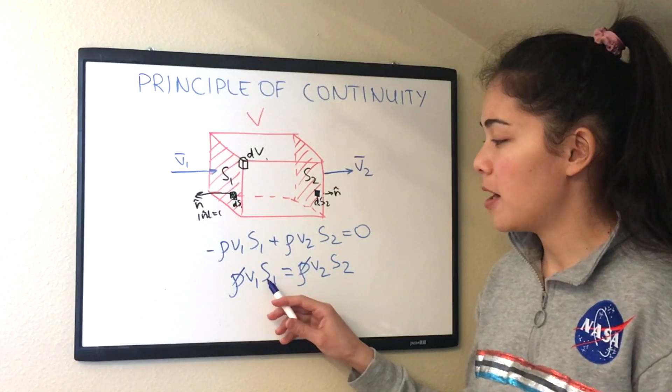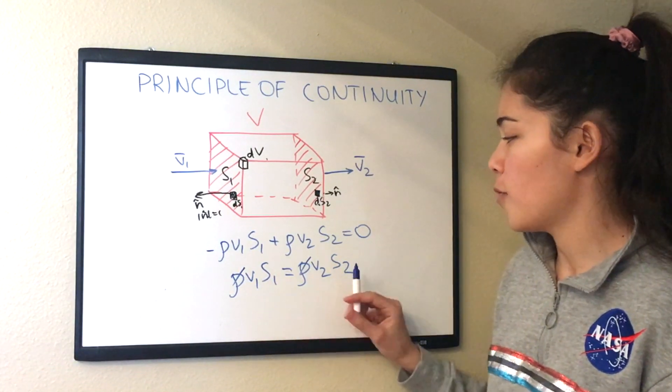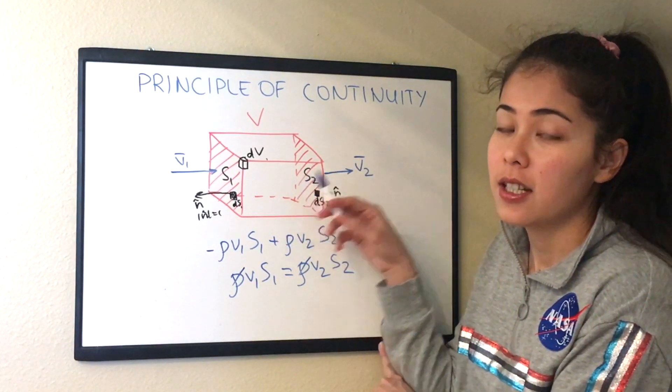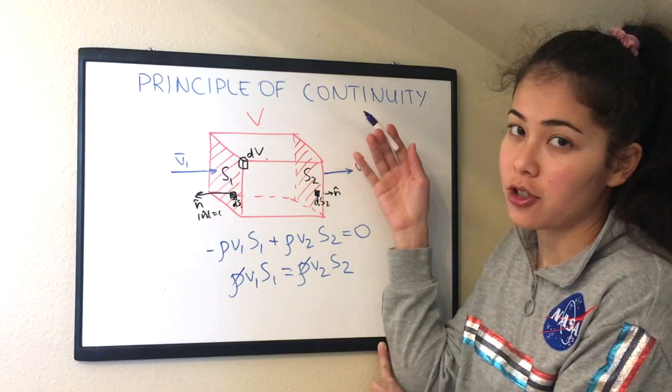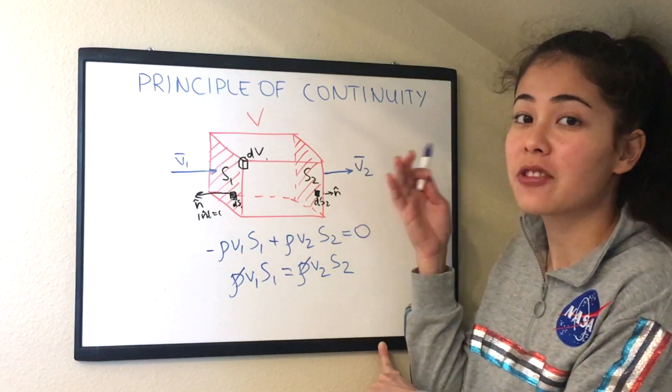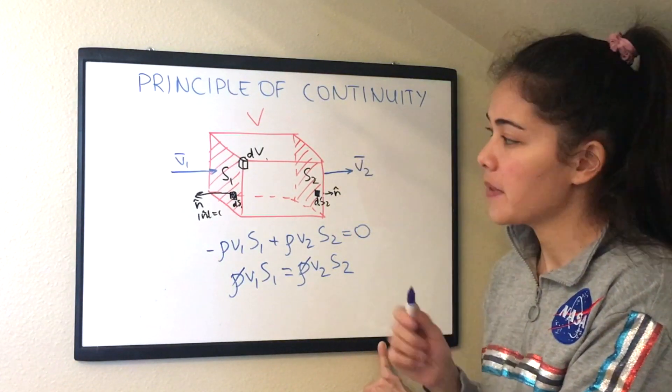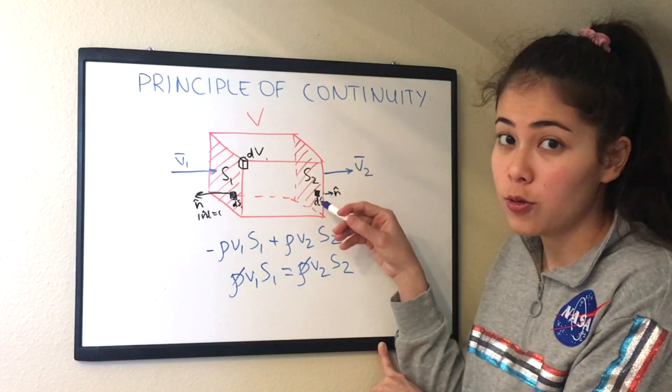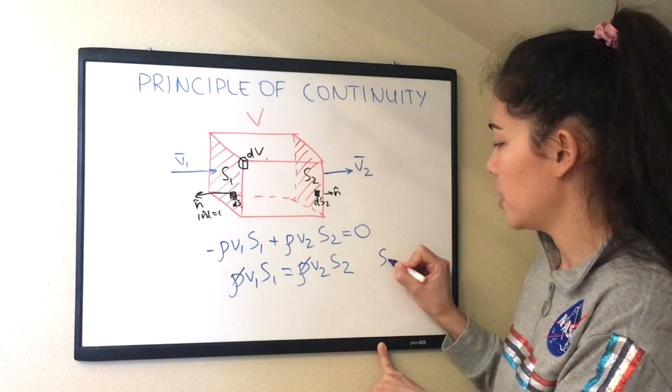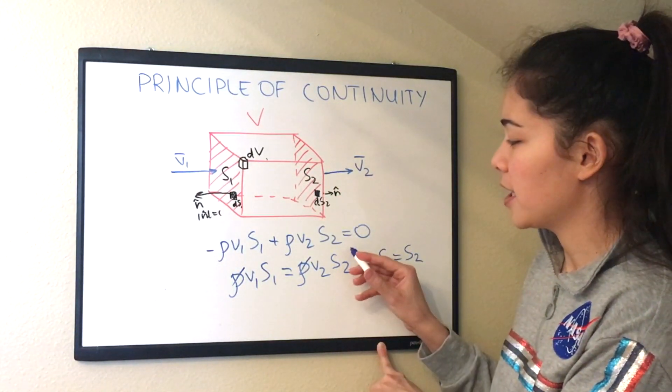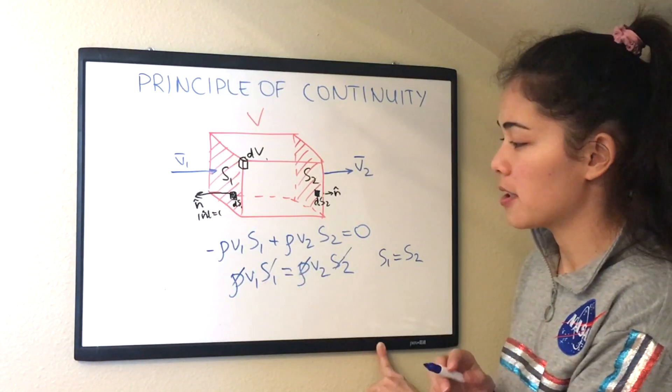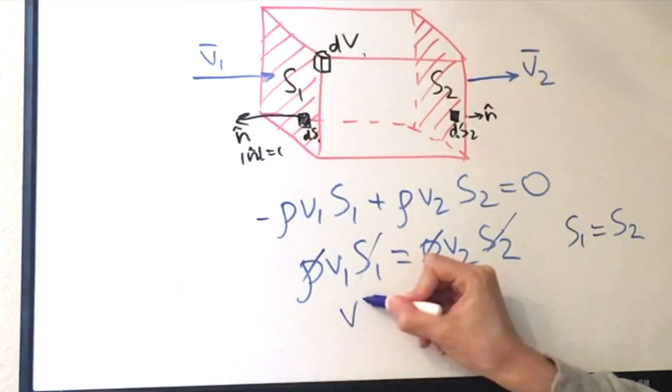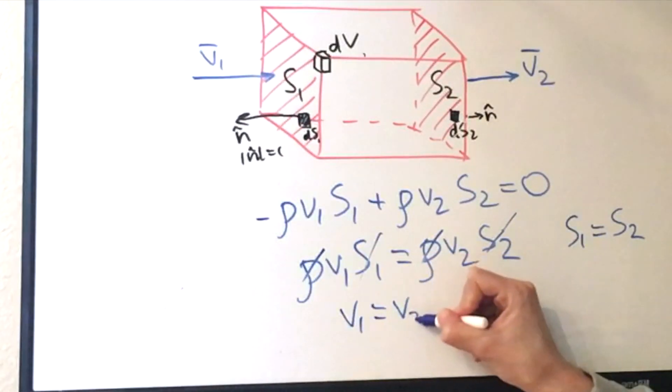And let's think about now about surfaces S1 and S2. Remember, this is just a rectangular box for the purpose of the lecture. It's just an example to understand the principle of continuity. So in this example, we assumed that S1 is equal to S2 because it's a rectangular box. Let me write it down. And then we can divide over by the surface. And then what we are left with will be V1 is equal to V2.